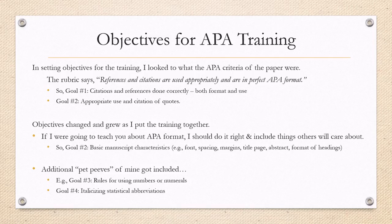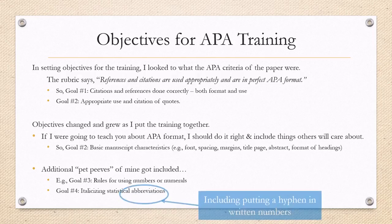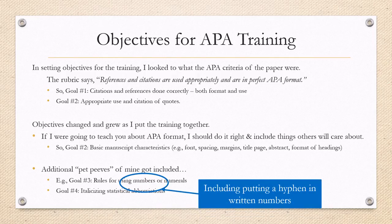And additional pet peeves of mine got included, such as the rules for using numbers versus numerals and italicizing statistical abbreviations, such as the R for correlation. And in this numbers includes putting a hyphen in written numbers between 31 or 22. I just want to point out that this is not an APA specific rule. This is an English language rule.